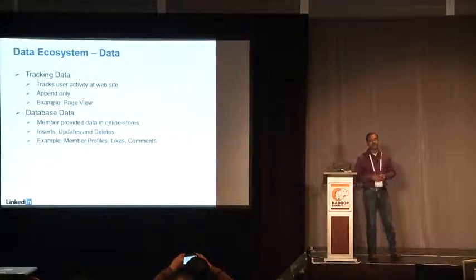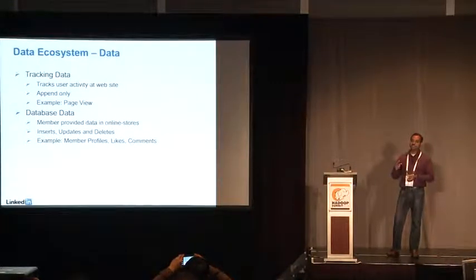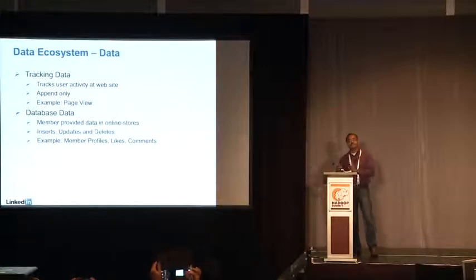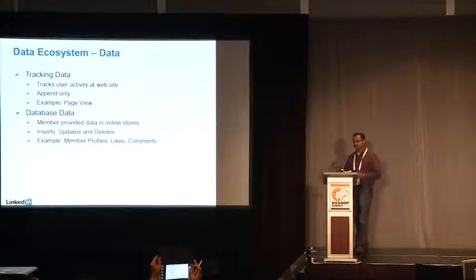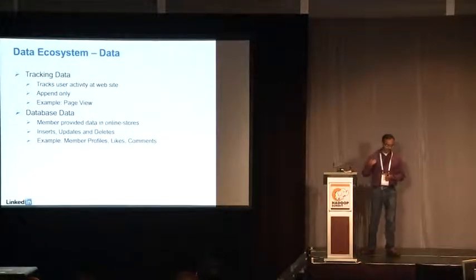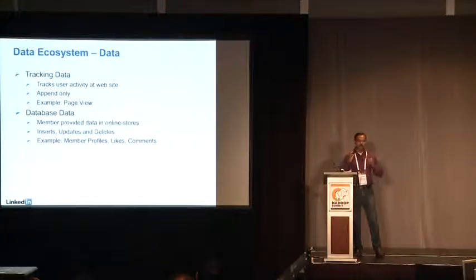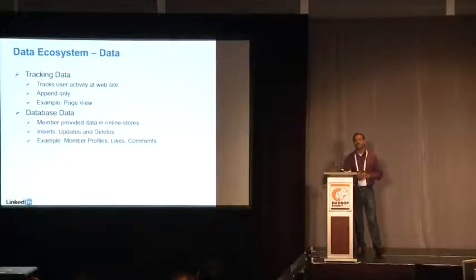There are primarily two types of data. One is the tracking data, another one is database data. User activity at the site turns into tracking data. The tracking data is append-only in the sense that each user activity generates new data, and it is immutable — once generated, it doesn't change. Examples of tracking data are viewing a page, clicking on an ad, and so forth. This data is arranged in date partitions on HDFS and accessed by a range, such as the last one week's data or last couple of hours' worth of data.